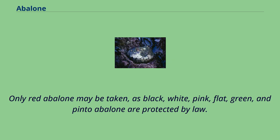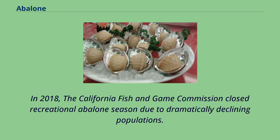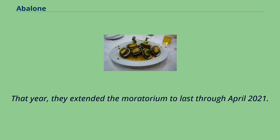As of 2017, abalone season is May to October, excluding July. Transportation of abalone may only legally occur while the abalone is still attached in the shell. Sale of sport-obtained abalone is illegal, including the shell. Only red abalone may be taken, as black, white, pink, flat, green, and pinto abalone are protected by law. In 2018, the California Fish and Game Commission closed recreational abalone season due to dramatically declining populations, and extended the moratorium to last through April 2021.